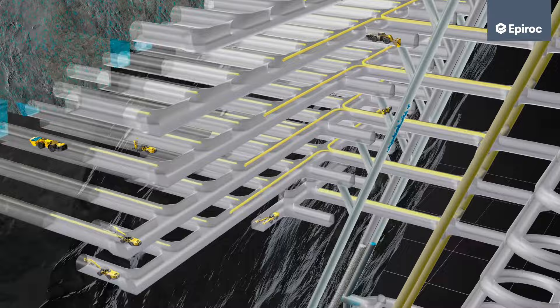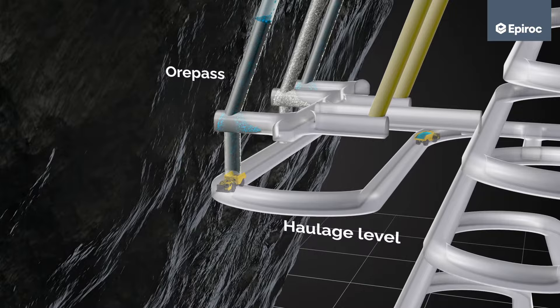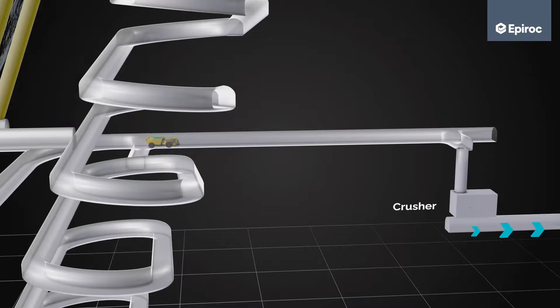Dumping the ore into ore passes connected to the haulage level is an efficient way of transporting rock from the production points to the crusher.